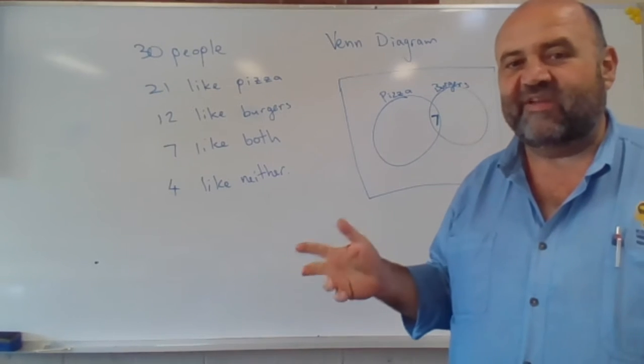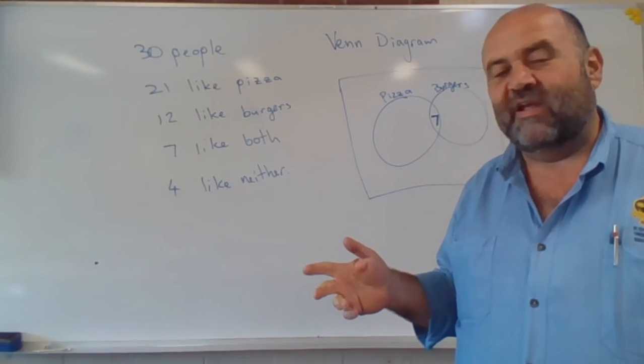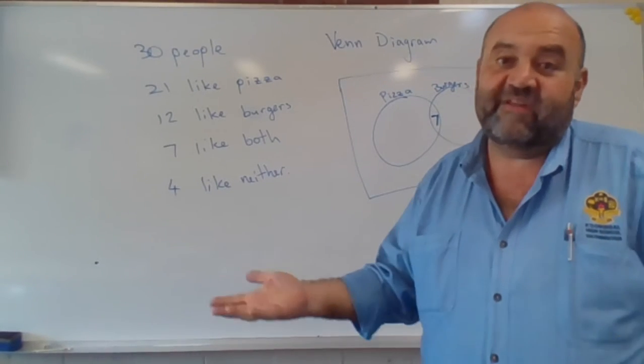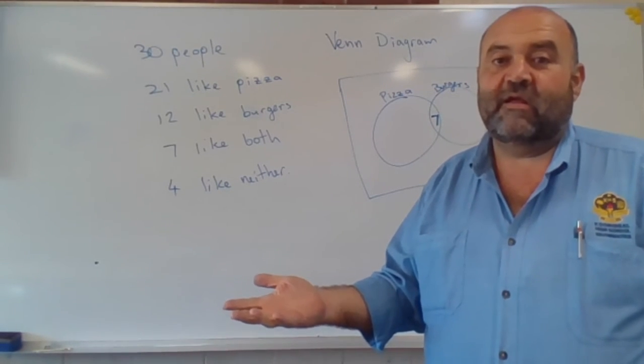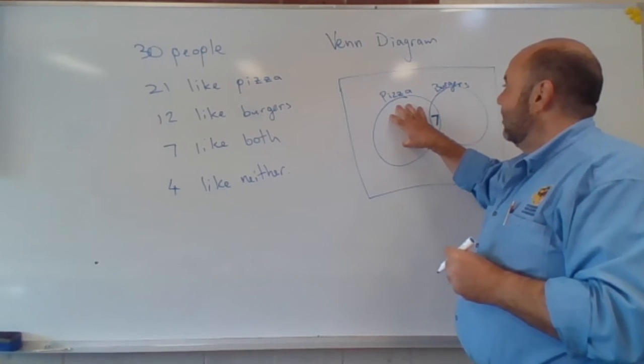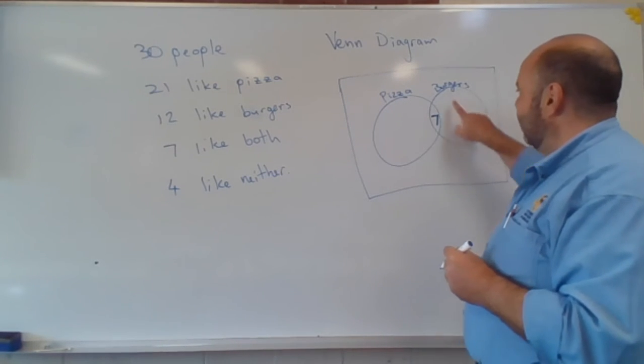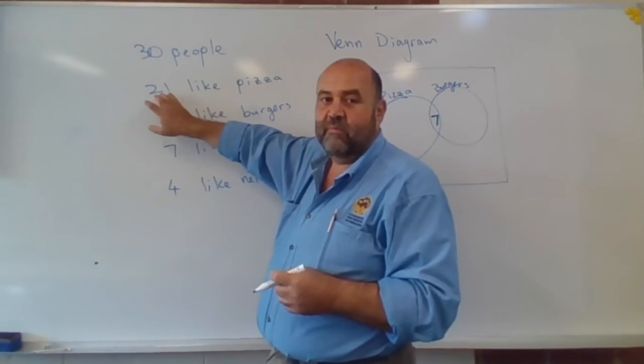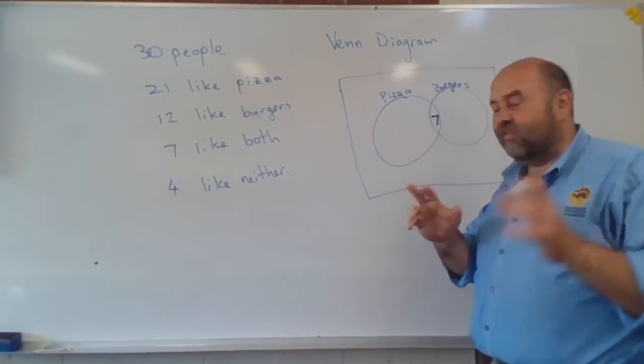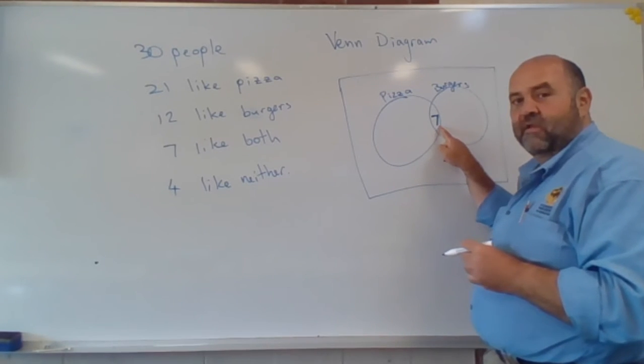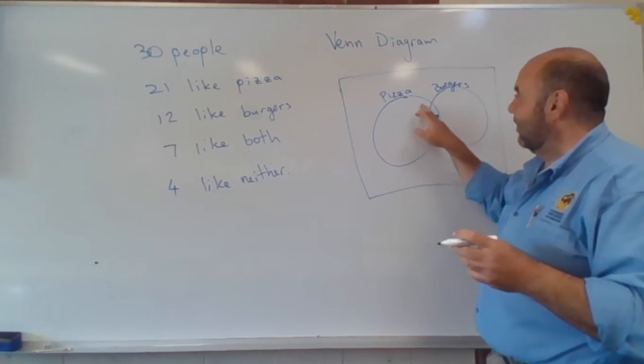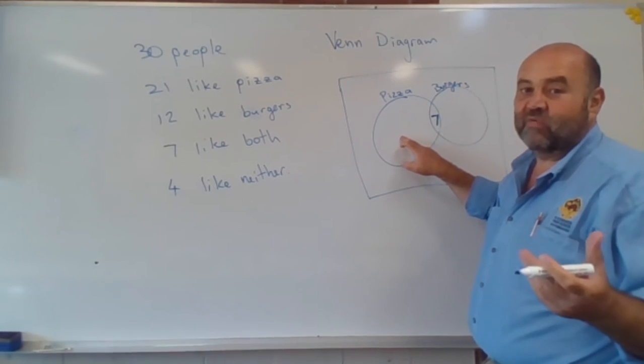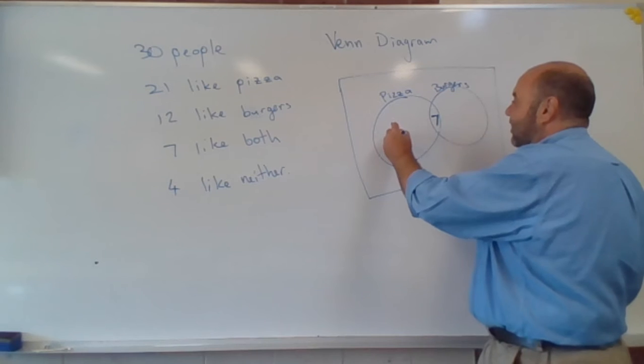Now, 21 people like pizza. Now, if you like pizza and burgers, you still like pizza. So inside this circle, this circle needs to add up to a total of 21 people, but there's already seven of those people here. So how many of the 21 are in this part of the circle here? Well, if the number's got out of the 21 and there's seven here, there's 14 over here.